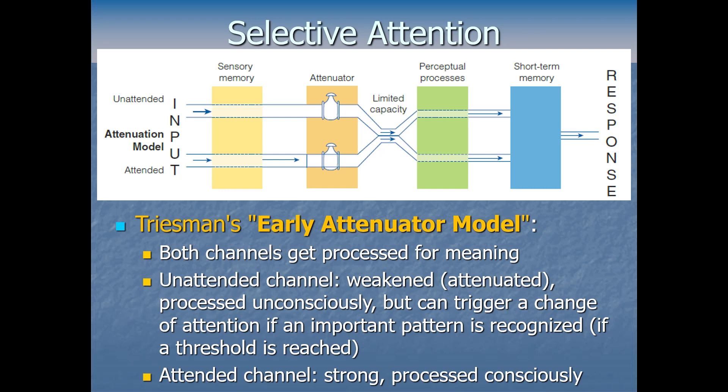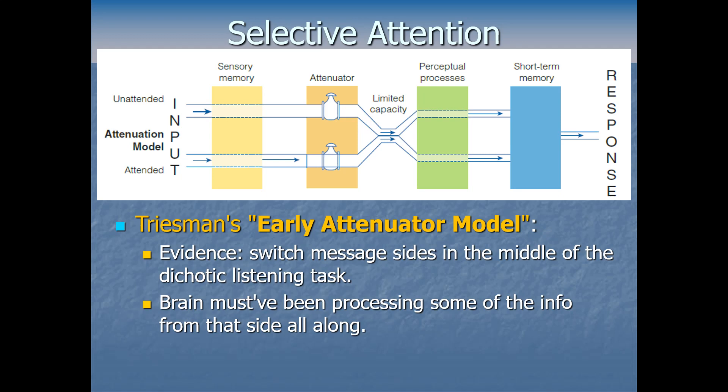There is good evidence supporting Treisman's model. For example, she found that if you switch message sides mid-sentence in a dichotic listening task — so the Abraham Lincoln sentence starts in the left ear but suddenly finishes in the right ear — people can still catch those first words of the attended message even though it's now on the side they were ignoring. That tells us their brain must have been sending through information from that unattended side all along, fitting better with her attenuator model than with Broadbent's early filter model.